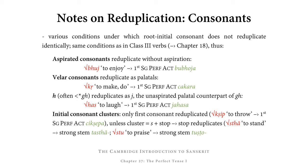The exception to the rule concerning initial consonant clusters is if the cluster consists of s plus a stop. In that case, it is the stop that reduplicates. For example, of sthā 'to stand,' we find the stop th reduplicating, but without its aspiration — so not as th but as t. This is added before the root, giving the strong perfect stem tasthau.